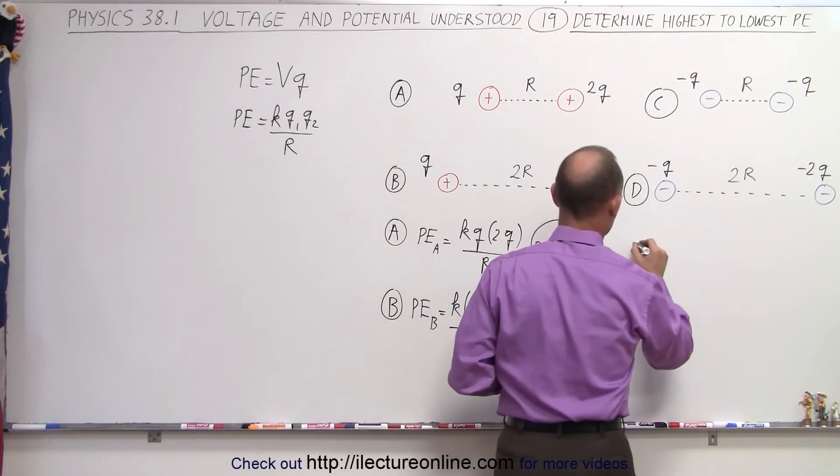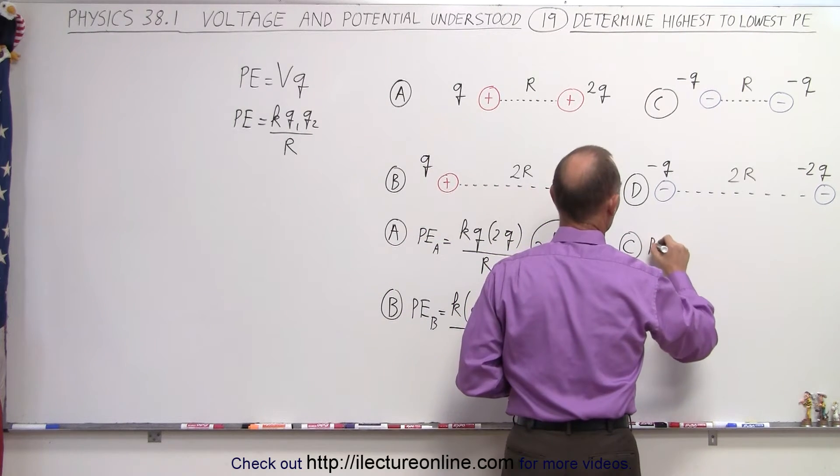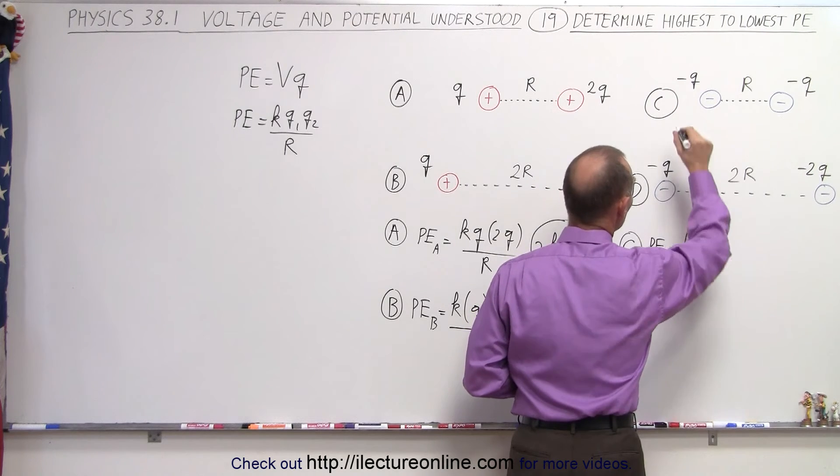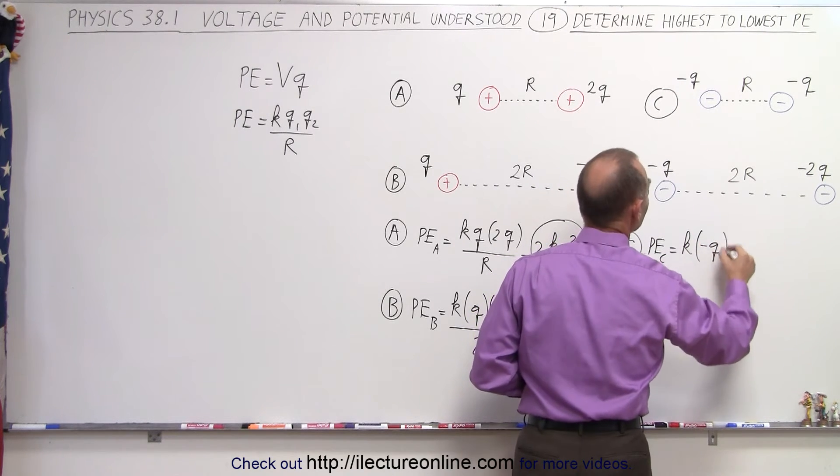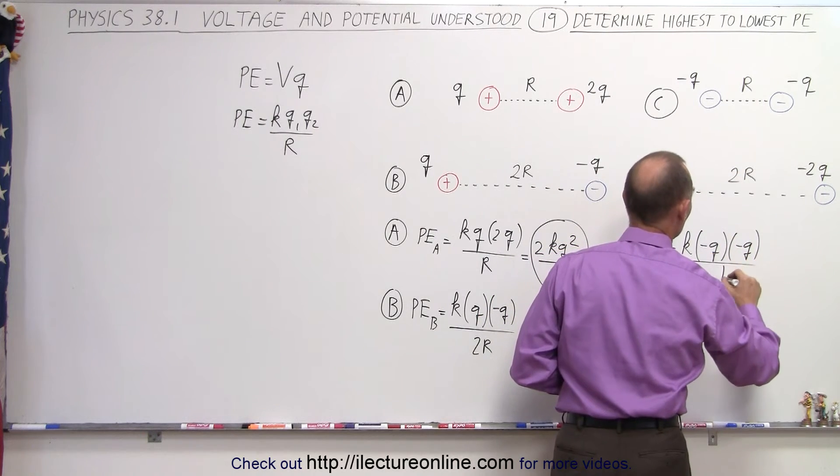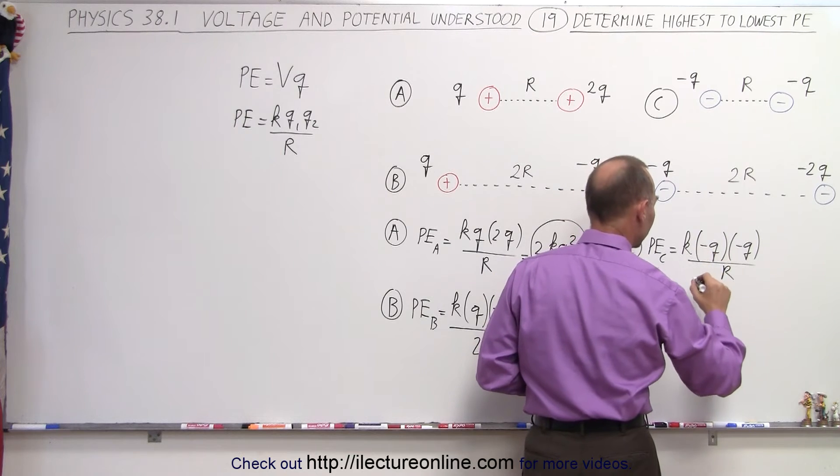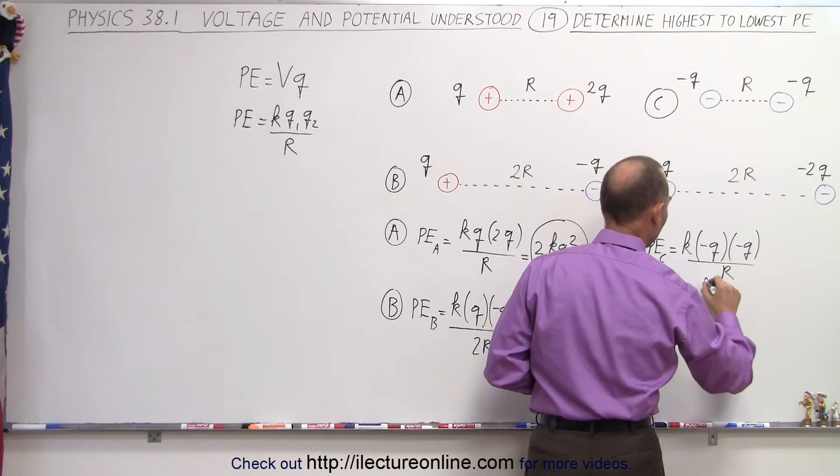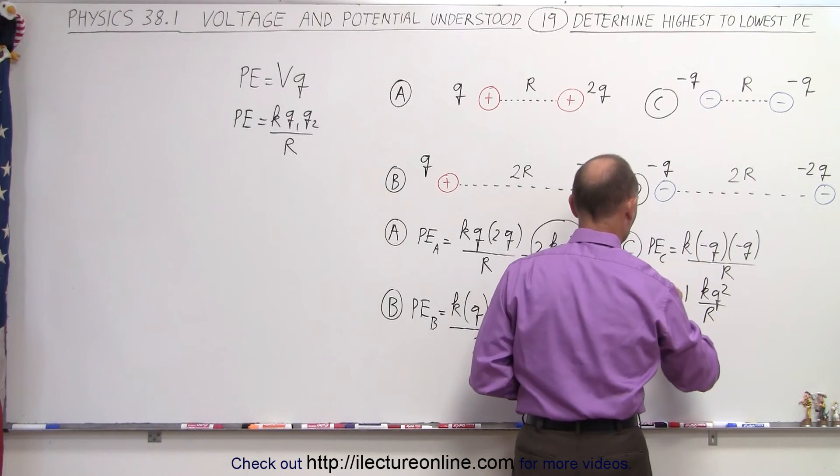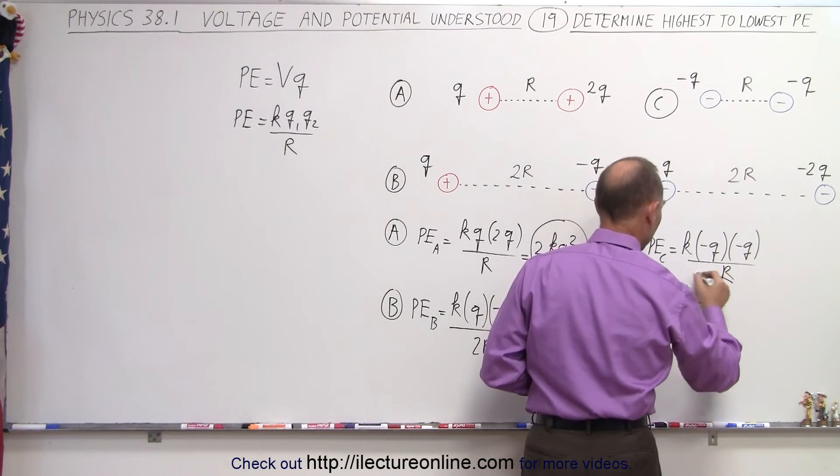For part C, that's potential energy C, that's equal to K times Q1, which is a minus Q, times Q2, which is a minus Q, divided by the distance, which is R. So this becomes equal to a positive 1 times KQ squared over R. So that's potential energy C, right there.